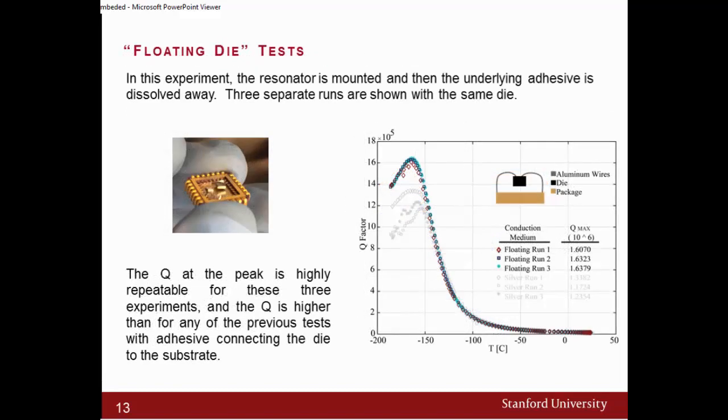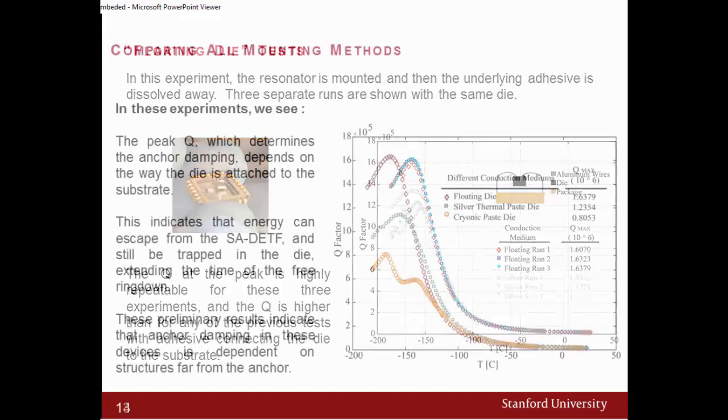Moreover, when we moved from that and actually tested it using what we call the floating testing, what happens here is that when you don't have this paste, now you get the same Q-anchor and then you get the same Q-anchor over and over again. So it's highly repeatable. As you can see, it's way higher than when you are using the thermal paste.